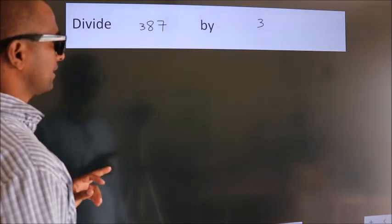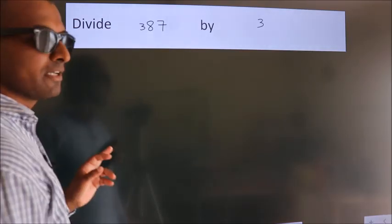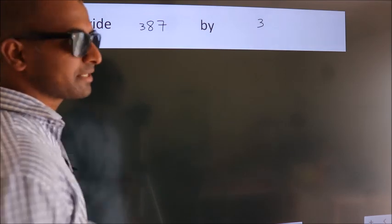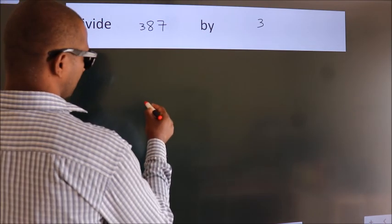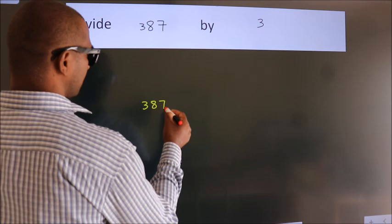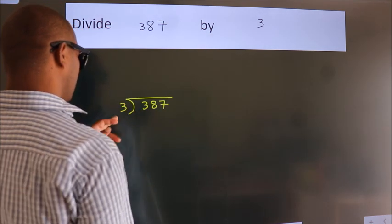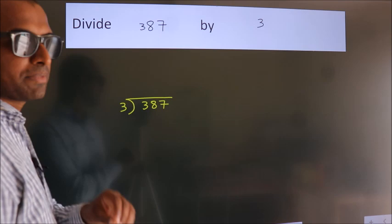Divide 387 by 3. To do this division, we should frame it in this way. 387 here, 3 here. This is your step 1.